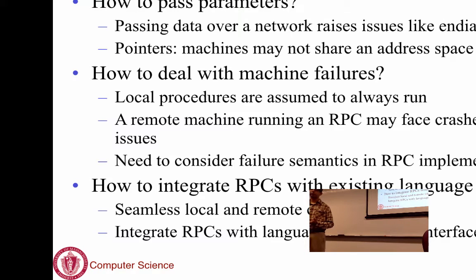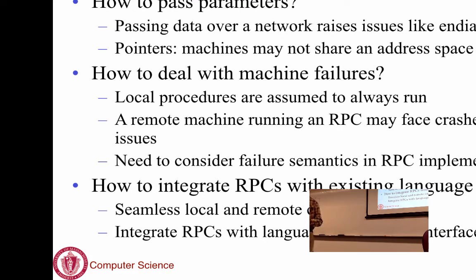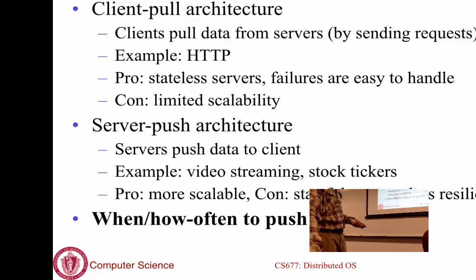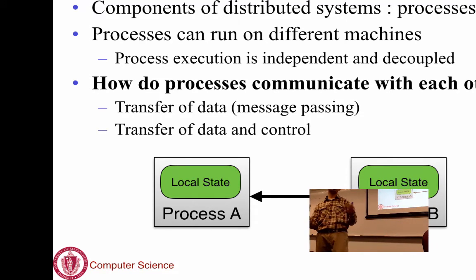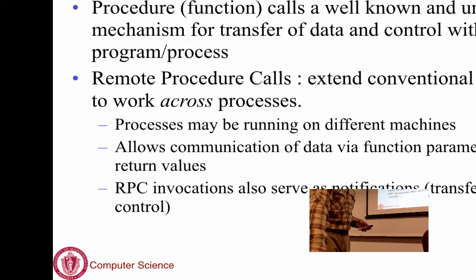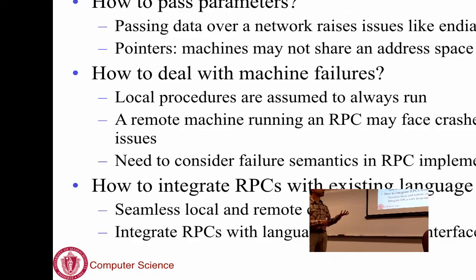There are challenges that make RPCs much more difficult to implement than local calls. Even simple issues like passing function parameters over the network become challenging. What happens if one of the parameters is a pointer to some memory address? You can't pass naked pointers to a remote machine because the virtual address space is local state that may not exist on the remote end. You can't pass fancy data structures straightforwardly either.